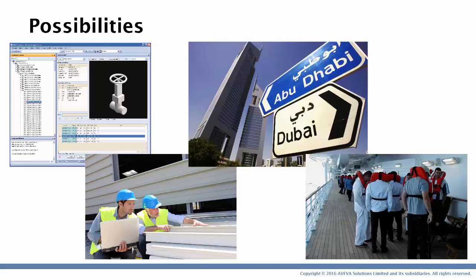A rather unusual solution is the use of Aviva Engineering for evacuation. With the Nuclear New Build project in the UK, a customer is using Aviva Engineering to capture and calculate the evacuation times from the building. Unlike a typical evacuation scenario, because the site is being constructed, during different periods of the project the evacuation routes will change, and they are using Aviva Engineering to manage that change and keep everybody informed about how to leave if there is an accident.